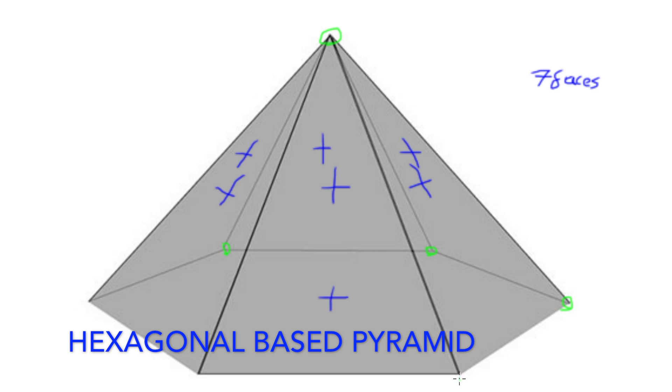We also have 7 vertices, that's 6 on the base, and 1 uniting all the supporting edges at the top.